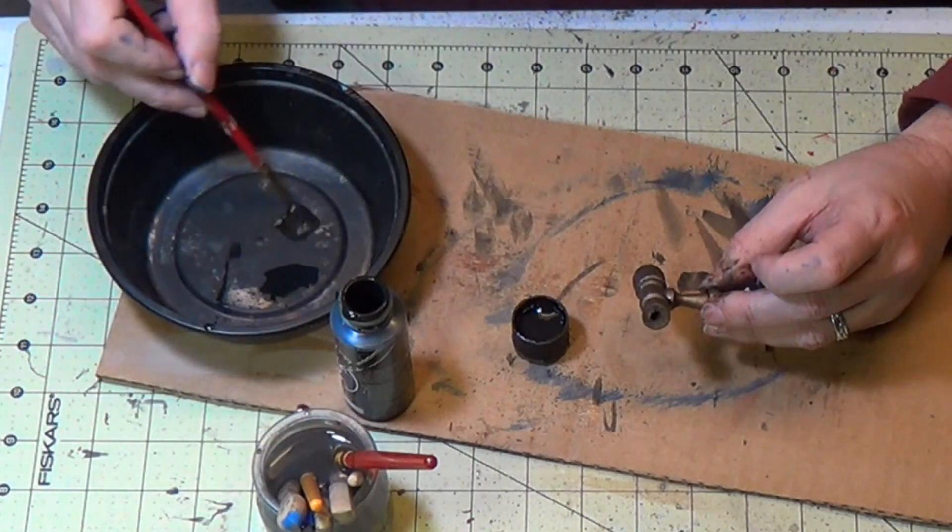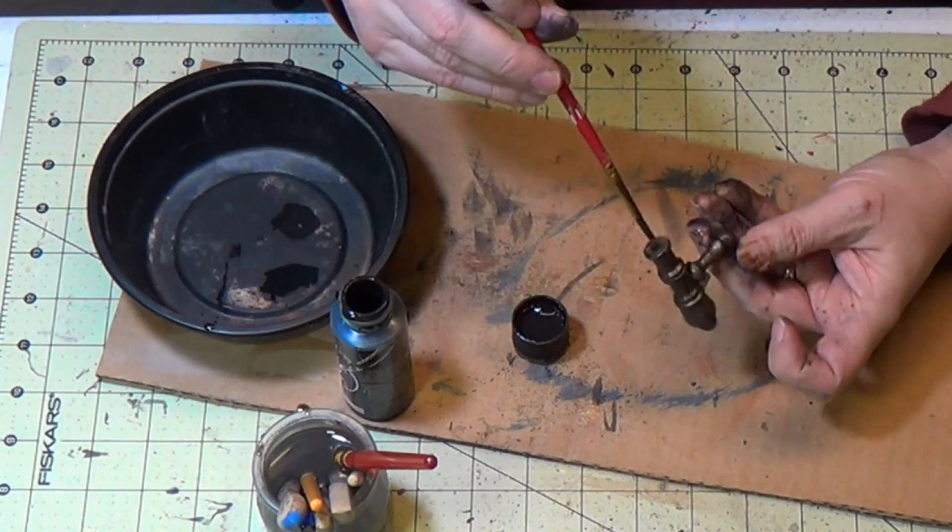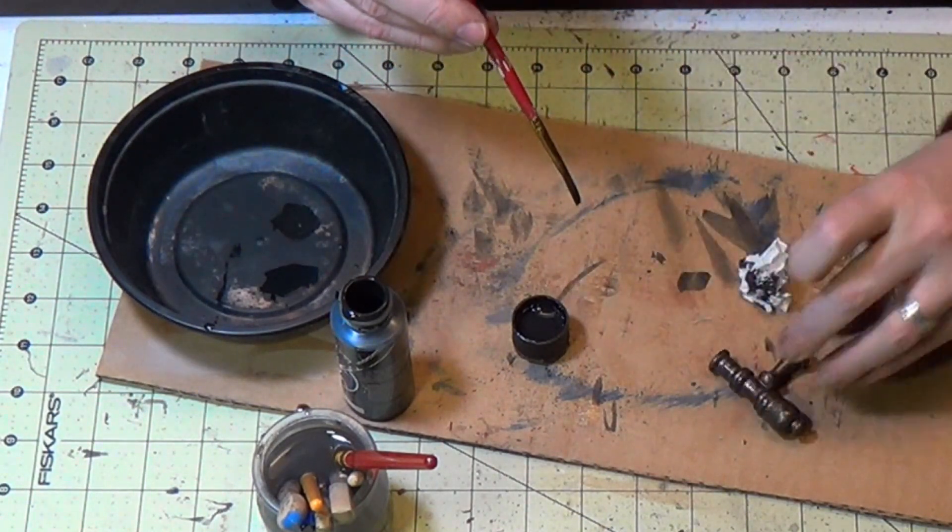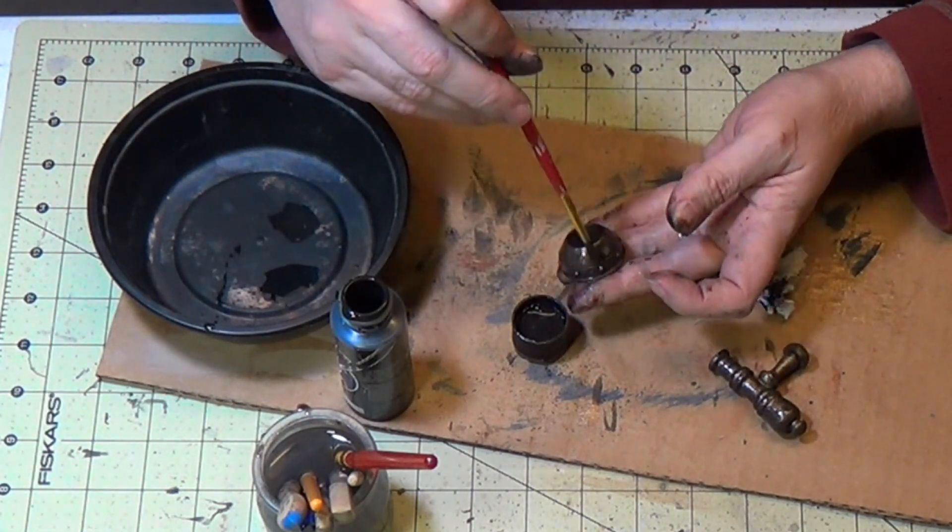Now we'll just put a wash on here, black wash. And that will really bring out the detail. See all the detail coming out and gives a little bit of age. So nice. And the base. All right, our deck gun is done.